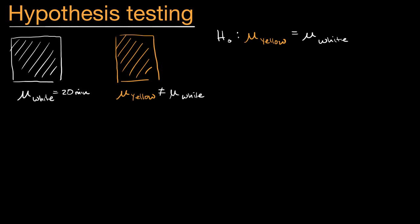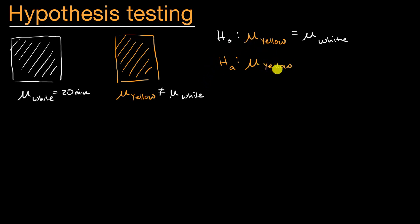While the people thinking about how to make change and improvements in the world have some type of hypothesis — we call that the alternative hypothesis. The alternative hypothesis is that the mean time on the yellow site is actually different, not equal to the mean amount of time on the white site.